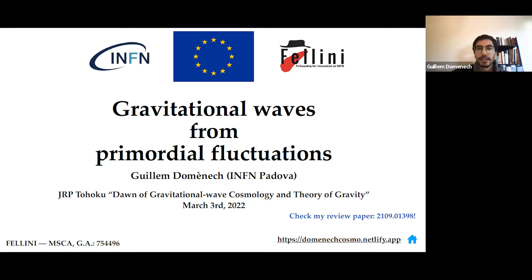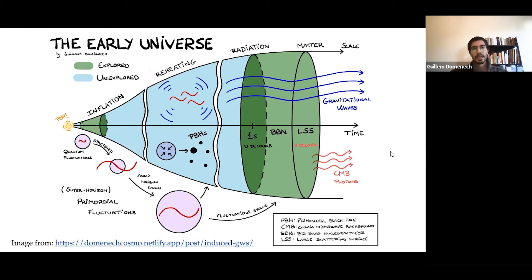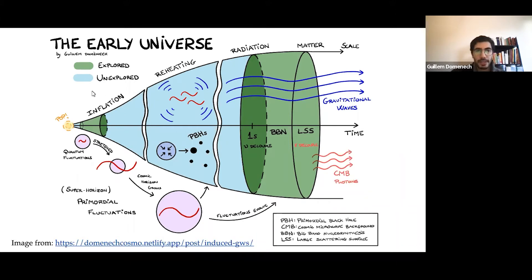Let me start with a rough illustration I drew some time ago. This tries to show the rough evolution of the early universe inferred from what we have observed — shown in green — and some periods we don't know very well, shown in blue. Time flows to the right. We don't know how the universe started, but we have strong evidence there was a period of inflation where quantum fluctuations get stretched and become the primordial fluctuations.